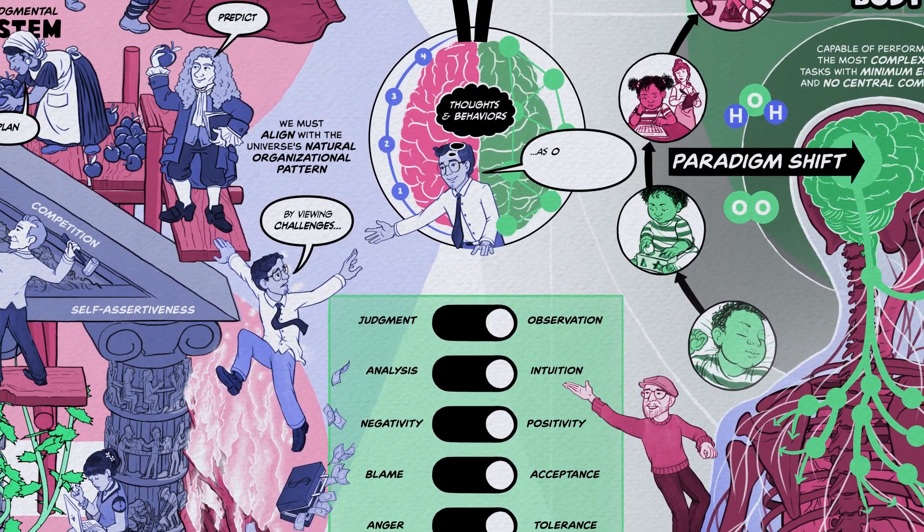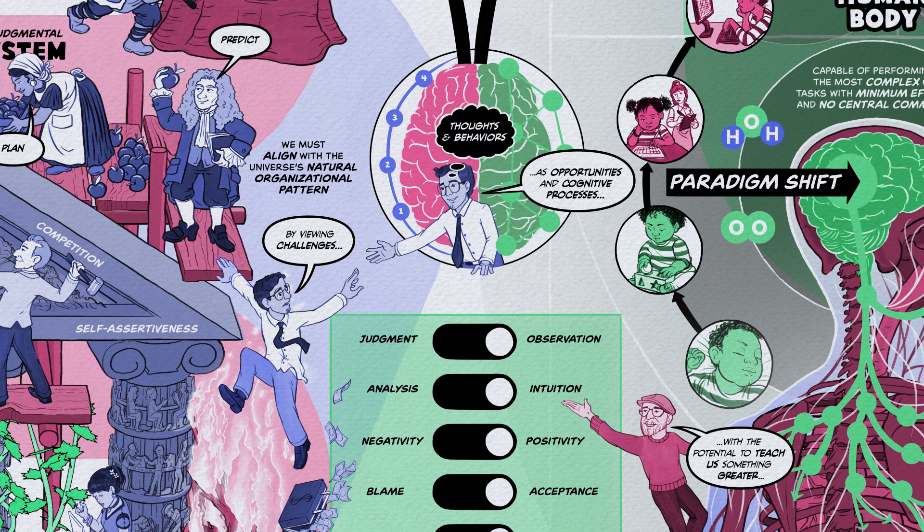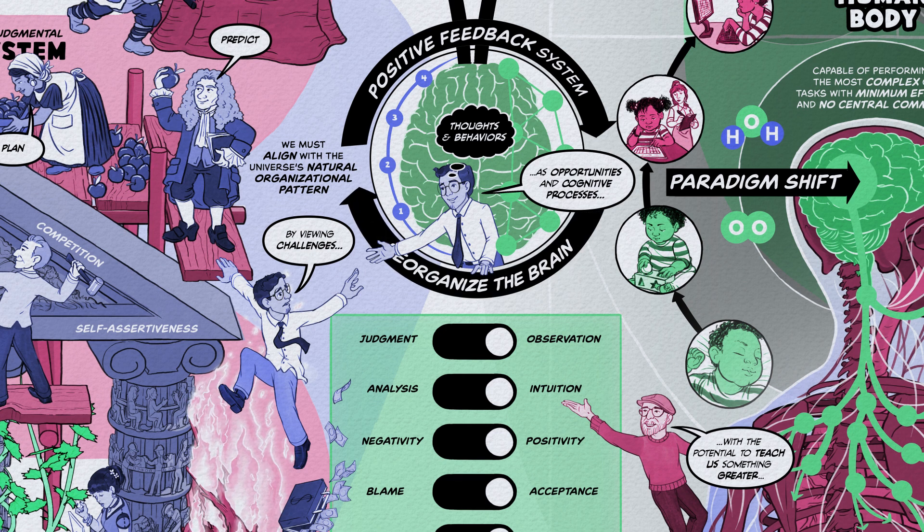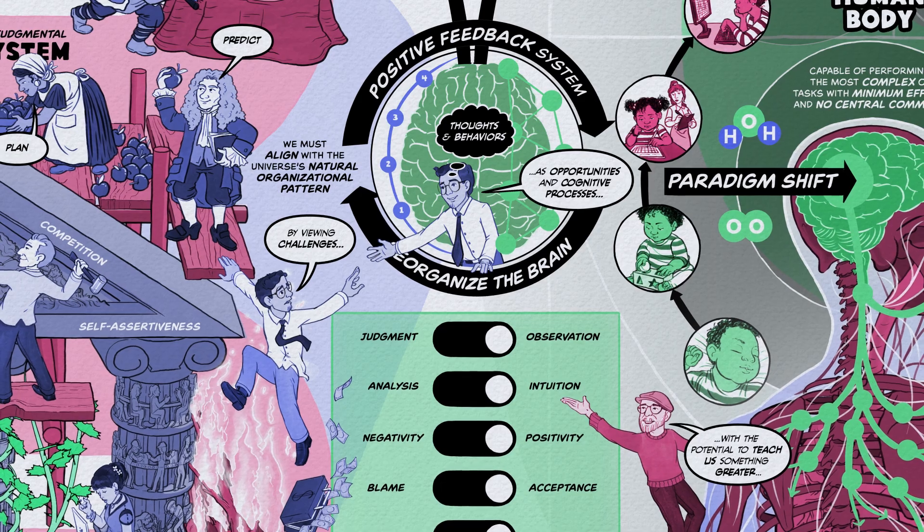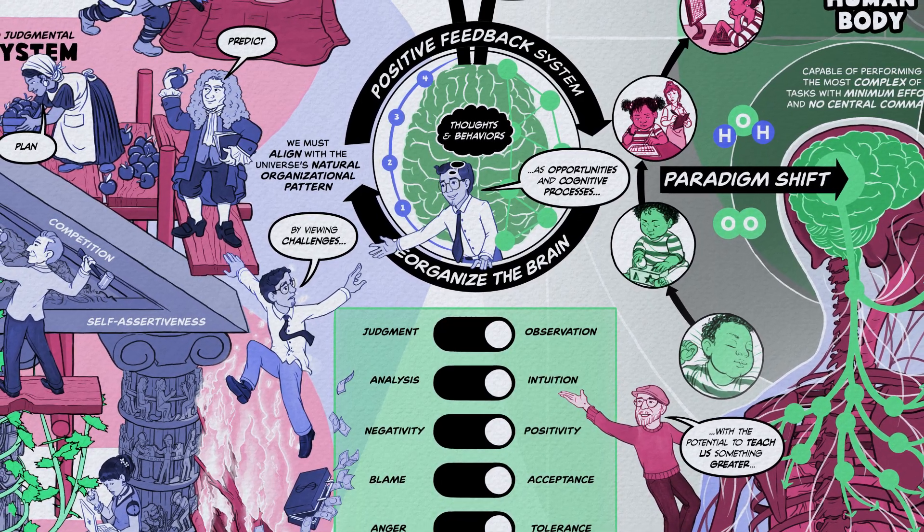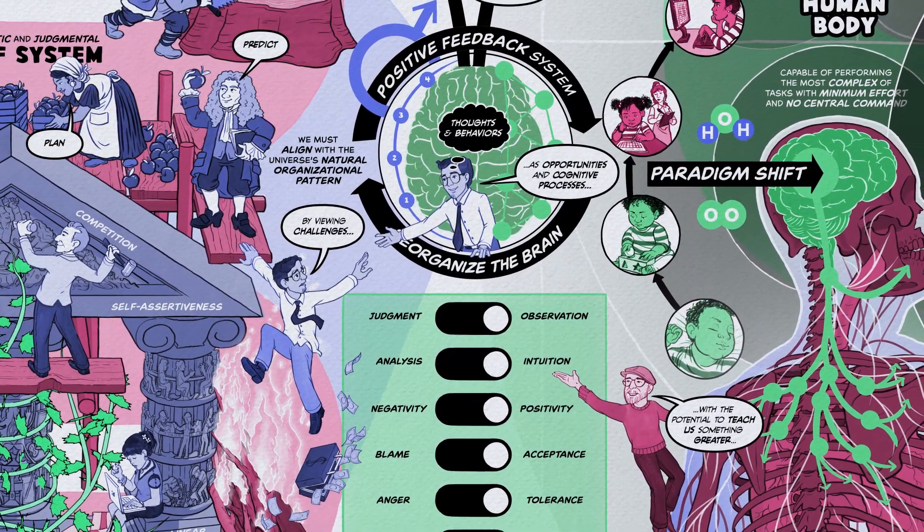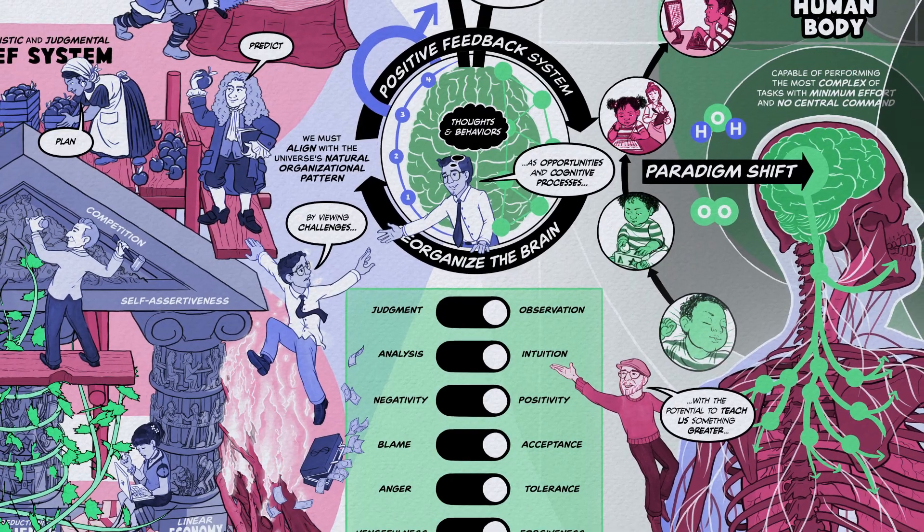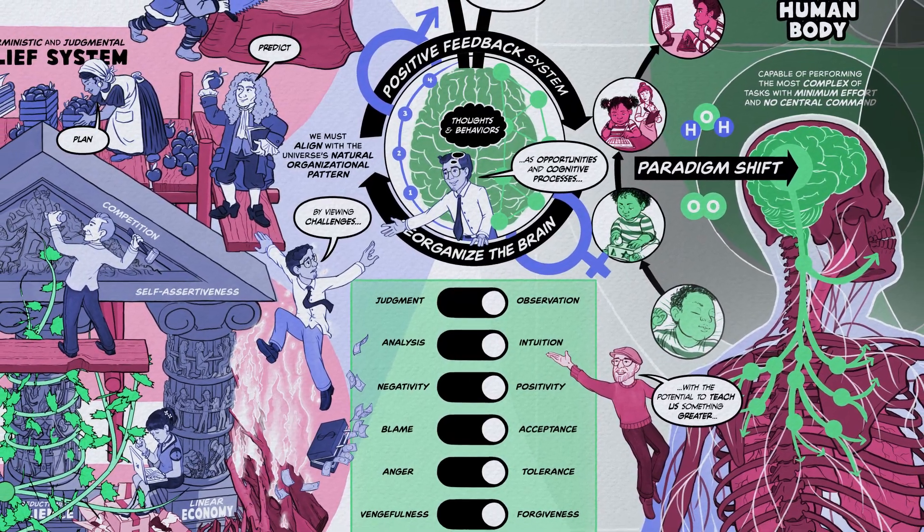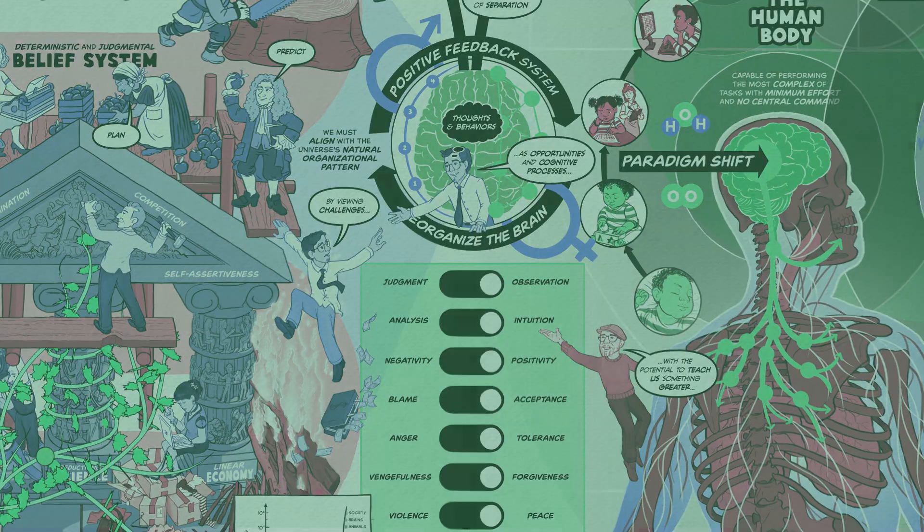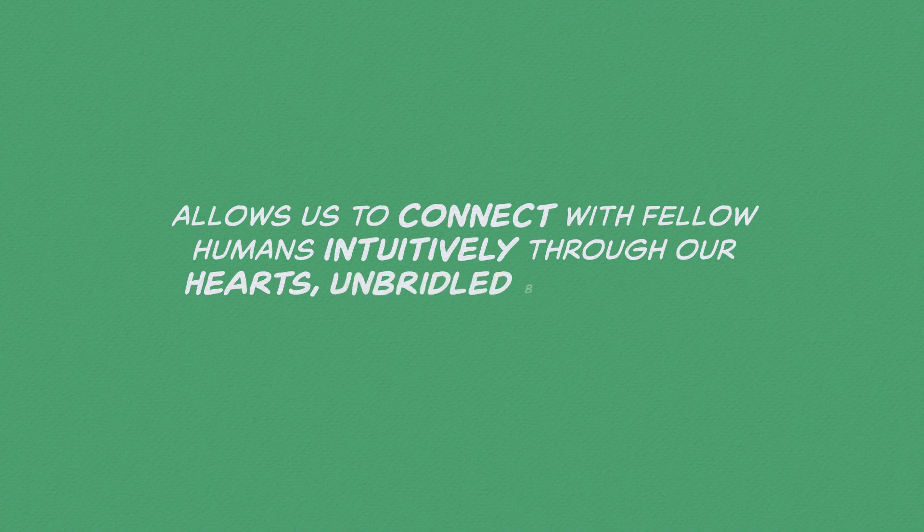By viewing challenges as opportunities and cognitive processes with the potential to teach us something greater, our non-judgmental observation acts as a positive feedback system to reorganize the brain. This process can enable the synchronization of the left and right hemispheres, overcoming the dominance of the more analytical, materialistic, and masculine left side. By activating the more intuitive, spiritual, and feminine right side and fostering cooperation between the hemispheres, we unlock the optimum potential of the brain and the whole body network, which in turn allows us to connect with fellow humans intuitively, through our hearts, unbridled by judgment.